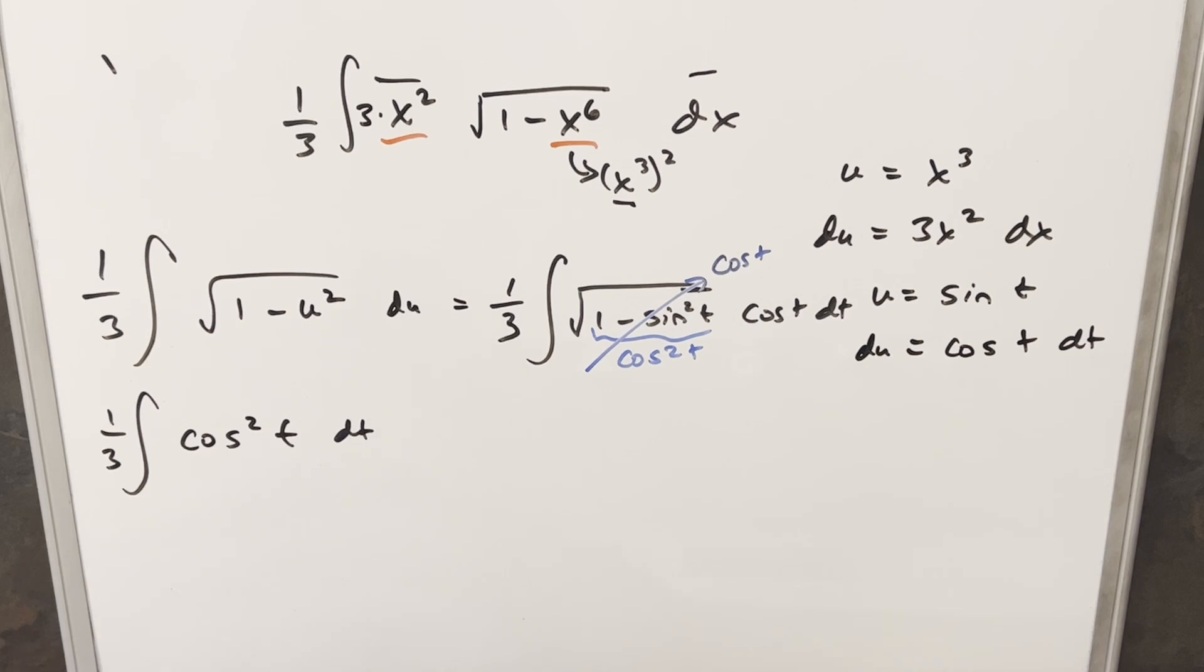And just one quick thing I want to notice now, just going back to our 1 minus u squared, because we're inside the square root, this value in here cannot be negative. So that means our u value, this u value, would have to be less than or equal to 1 or greater than or equal to minus 1 in order for this to be valid. And then with our substitution, u equals sine t,